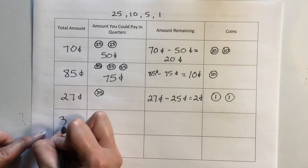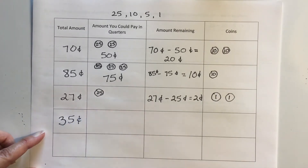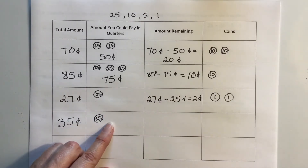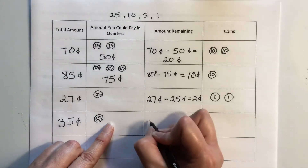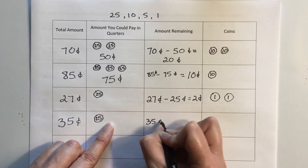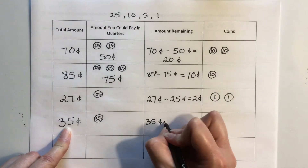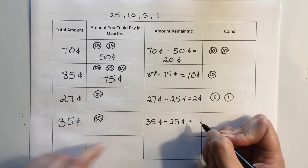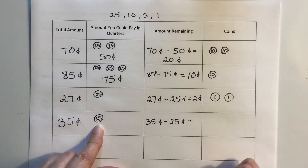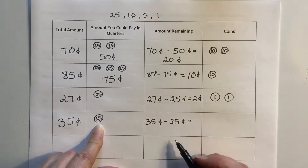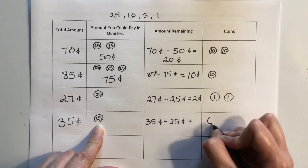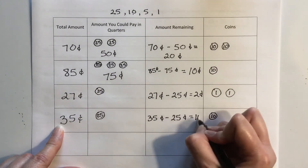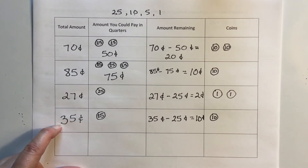What if I wanted to make 35 cents? I know I can use one quarter, but can I use two? No, I can't. So I go 35 cents take away 25 cents. I put 25 cents in my head, then go to my dimes: 25, 35 — I made my total already. The answer is 10 cents.